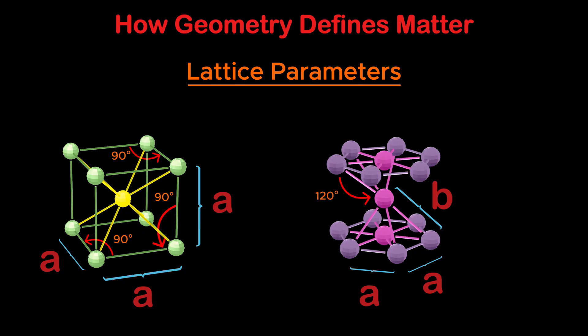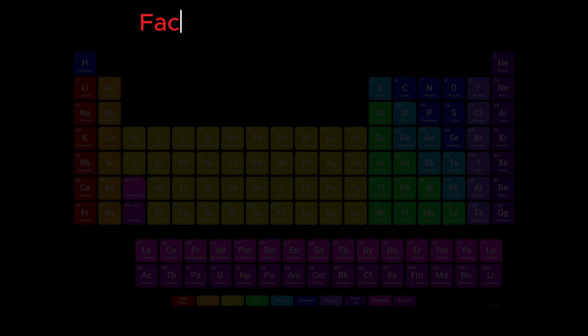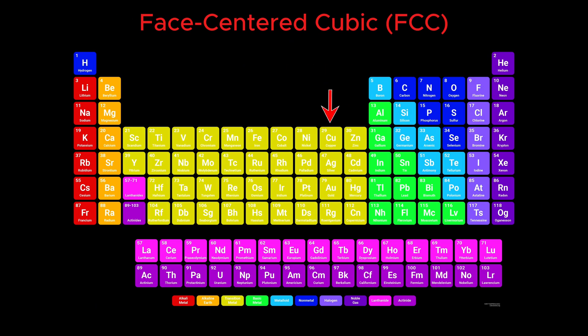Now that we understand these geometric ideas, let's apply them to the four crystal classes. Materials like aluminum, copper, gold, silver, nickel, and lead belong to a class called face-centered cubic, often abbreviated as FCC.